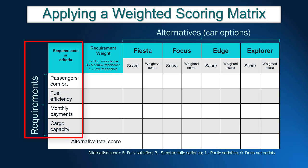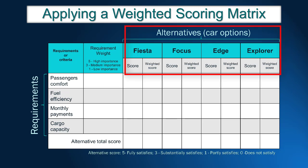The first step is to create a table with the requirements and possible alternatives. The requirements are listed in the first column. We summarized John's needs into four major requirements: passengers' comfort, fuel efficiency, monthly payments, and cargo capacity. Secondly, we need to identify alternatives — in this case, the car models John can buy.